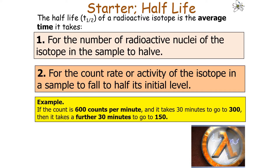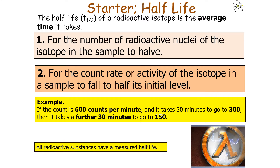For example, if the count is 600 counts per minute and it takes 30 minutes to fall to 300 counts per minute, the half-life is 30 minutes. Therefore, it would take a further 30 minutes to go from 300 to 150. It is important to note that all radioactive substances have a measured half-life.